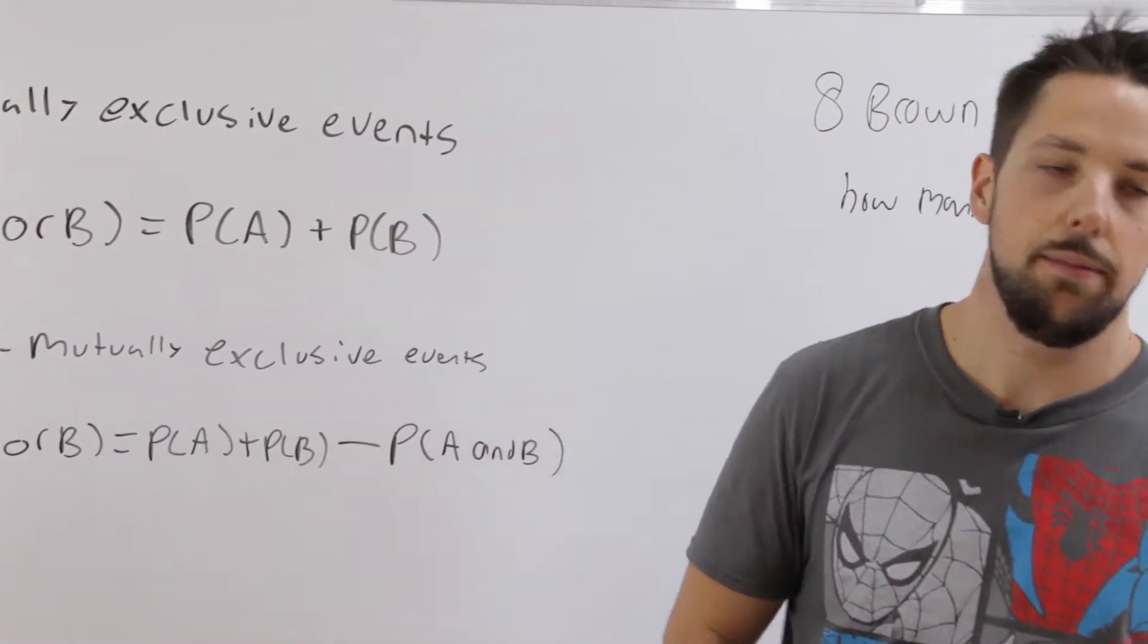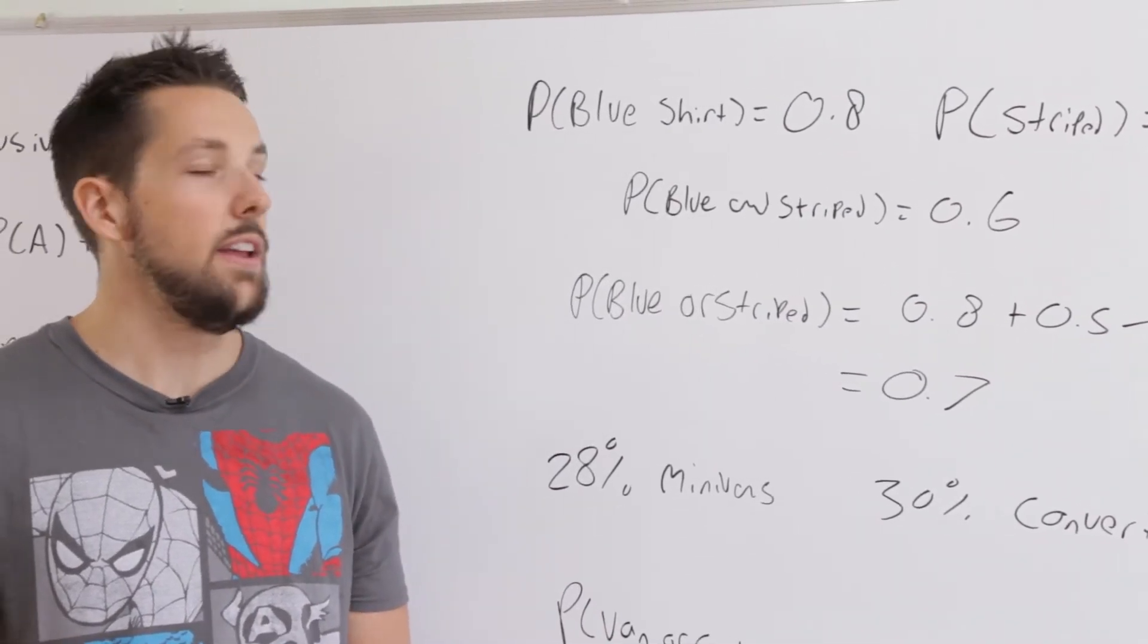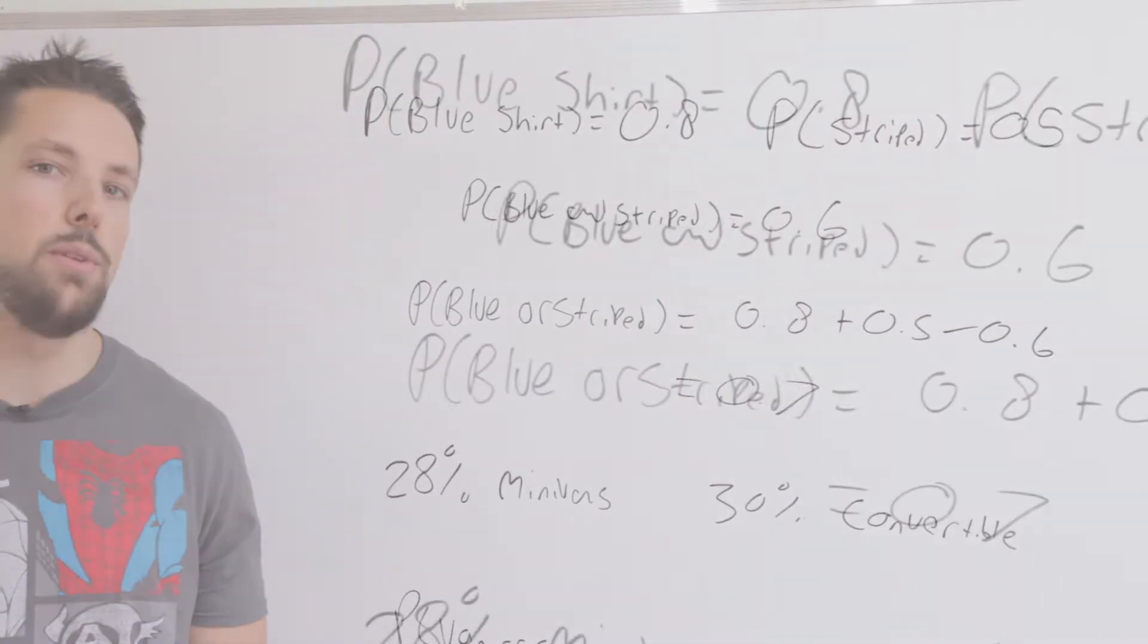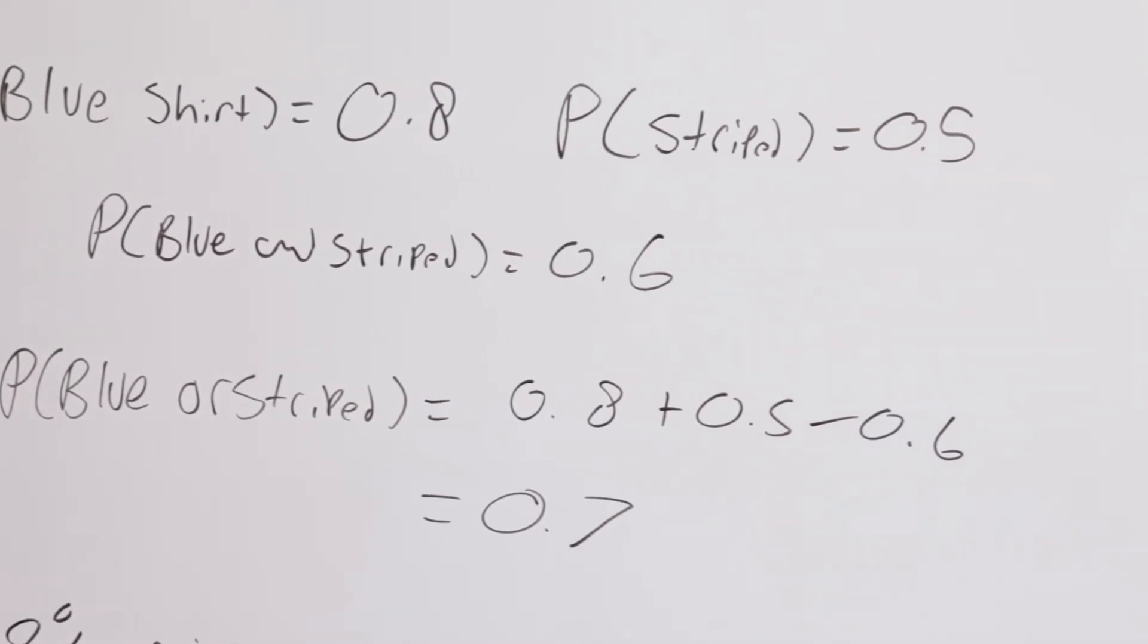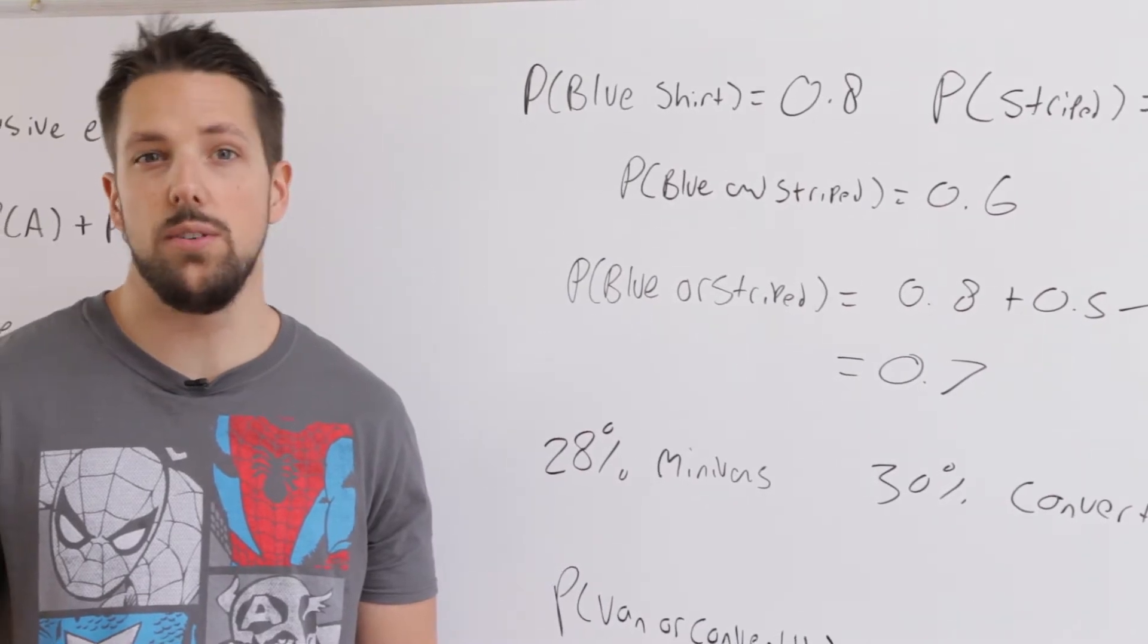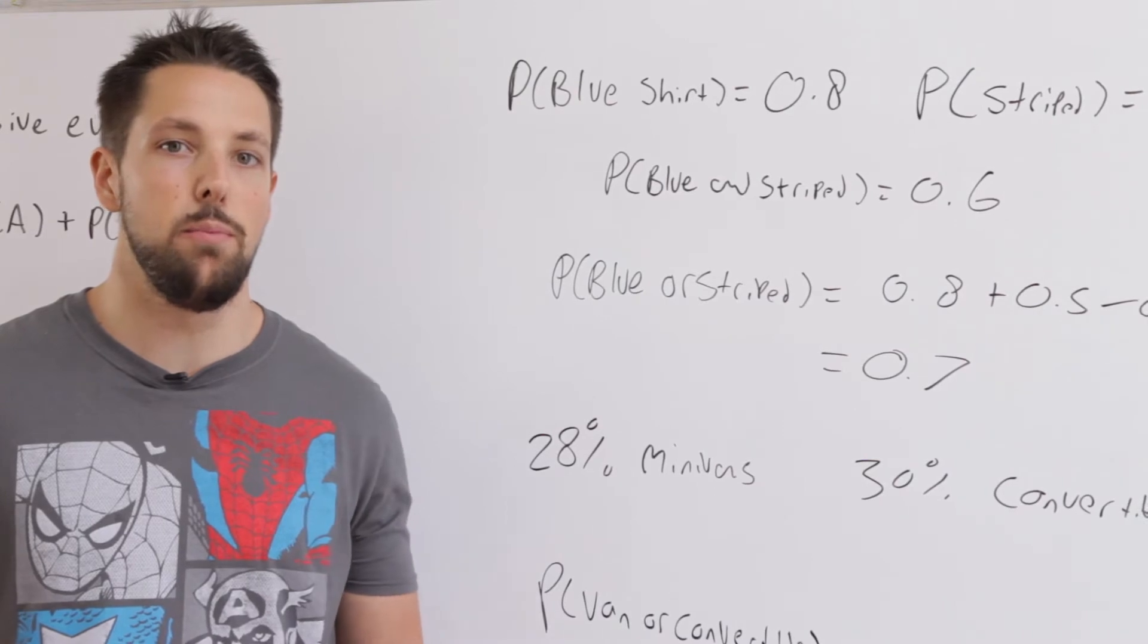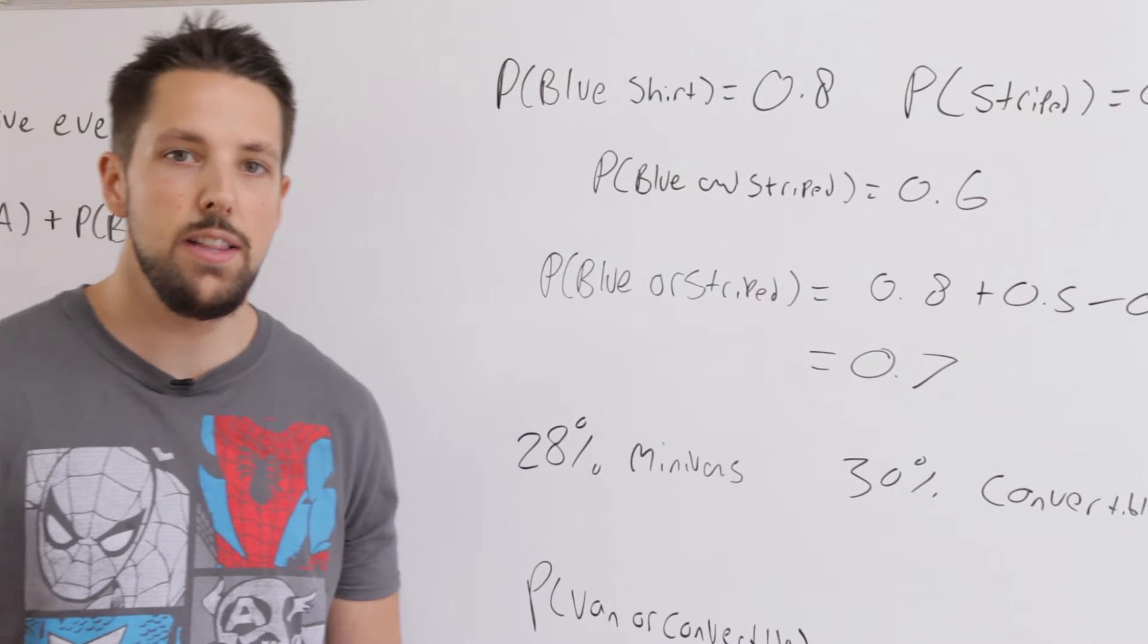I'll give a couple examples to make this make more sense. Say at a department store, 80% of the shirts are blue and 50% are striped and 60% are blue and striped. So what's the probability of getting a shirt that's either just blue or just striped? First we think, are these mutually exclusive or non-mutually exclusive? Well, since there's an intersection where you can be both blue and striped, that means it's non-mutually exclusive.